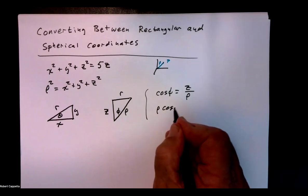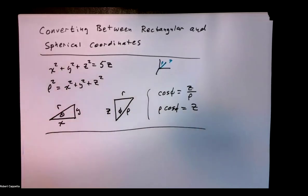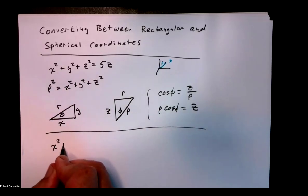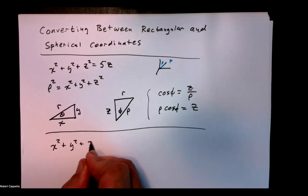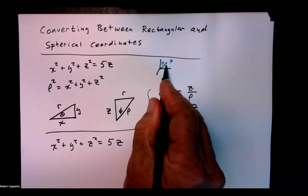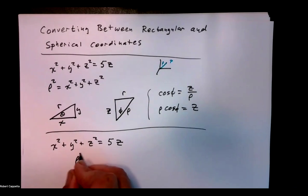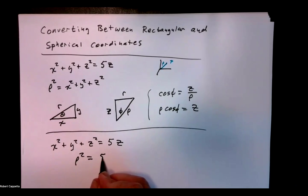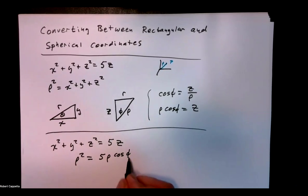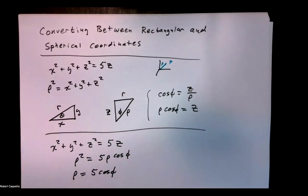So rho cos phi equals z. Let's go ahead and do our substitution to convert this into spherical coordinates. We have x squared plus y squared plus z squared equals 5z. The length of that vector from 0 to P is rho squared. So rho squared equals 5z equals 5 times rho cos phi. We can divide out rho to finish with rho equals 5 cos phi.